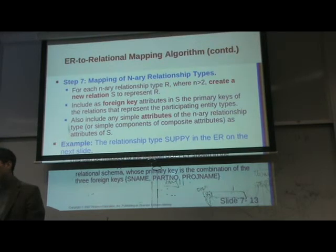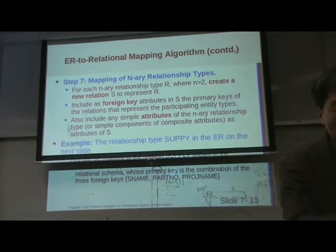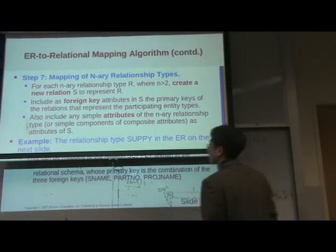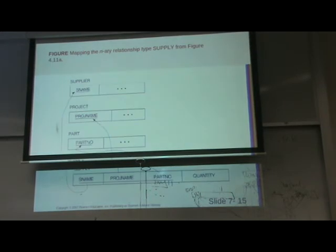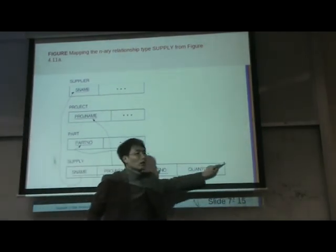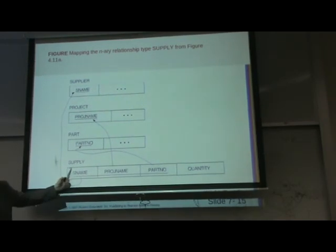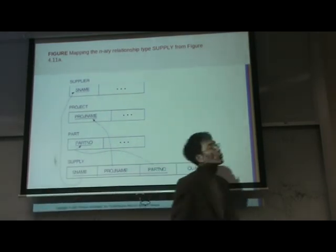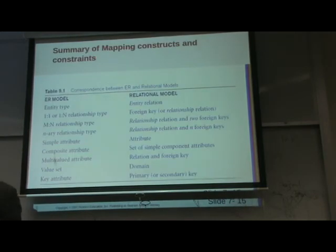The last one is the N-ary relationship. We learned about the N-ary relationship — for example, supply: a supplier supplies an item to a project. One relationship involves three entities. There is no way to directly create an N-ary relationship in the relational model. Instead, create an in-between table — the supply relation. S_name, project name, and part number will be the composite primary key of the supply table, then create the foreign keys accordingly.